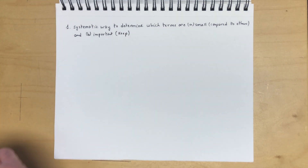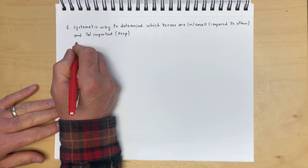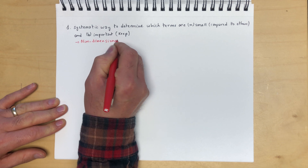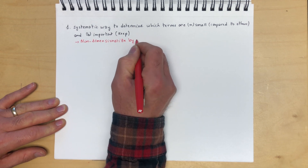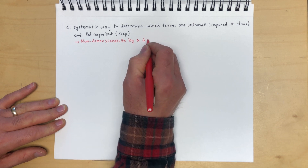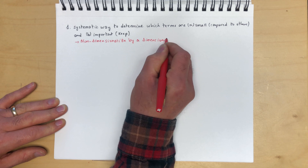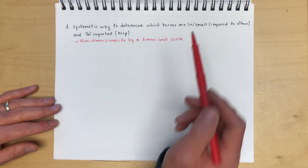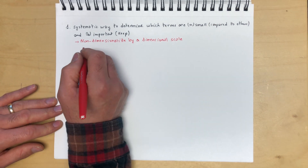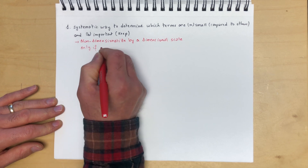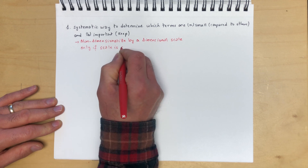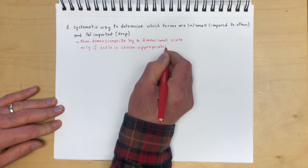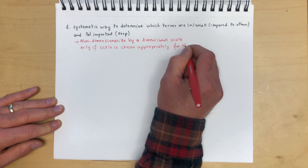So there's a very important point to make here. It is one thing to non-dimensionalize the equation by a dimensional scale, but you can only make judgment calls on which terms are larger than others if and only if the scale is chosen appropriately.